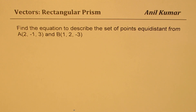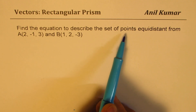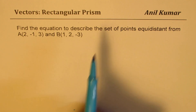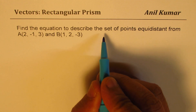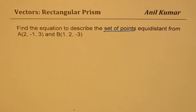I can understand why this question is very difficult for you. It comes from your Unit 6 where you just learned the basics about vectors. And the question is: find the equation to describe the set of points equidistant from A and B. Set of points — this is important to understand.